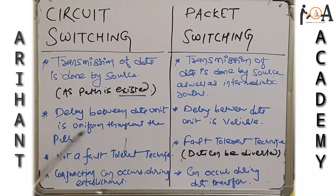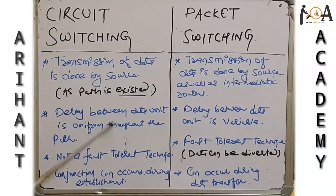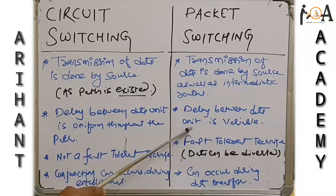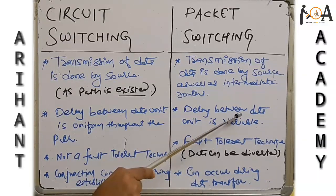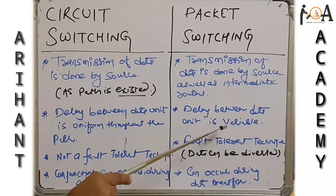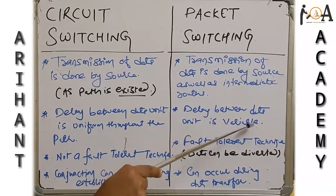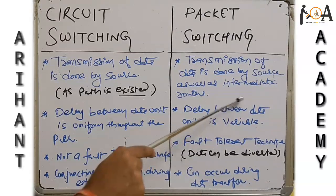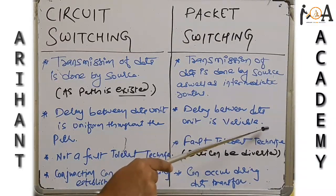In circuit switching, the delay between data units is uniform throughout the path, because data is sent along a fixed path and the delay is constant. Whereas in packet switching, the delay between data units is variable — some units may take longer and others less, because no fixed path exists and each unit may travel a different route.